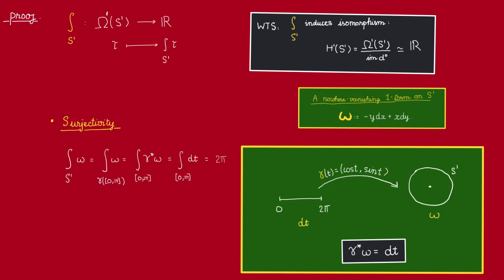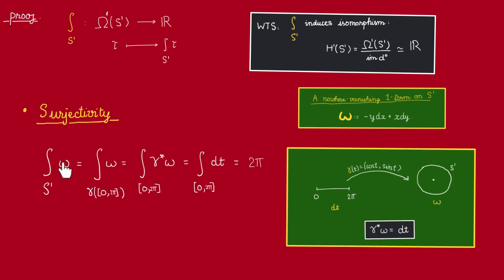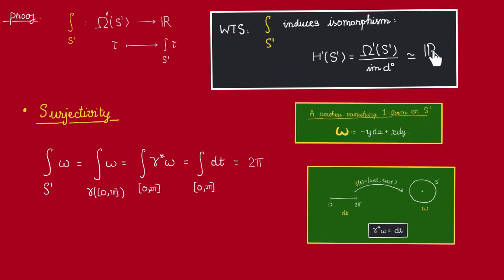Well, we look at the usual parametrization of the circle by the interval from 0 to 2π, given by t is mapped to (cos t, sin t). Then, this one form omega is the one form that pulls back to dt. Now, if we take this one form and integrate it over the circle, then that's just the same as integrating dt over the interval 0 to 2π. So that would give us 2π, which is non-zero. And thus, the image of this map is not zero, so it must be surjective. Alright, so we have proved surjectivity.